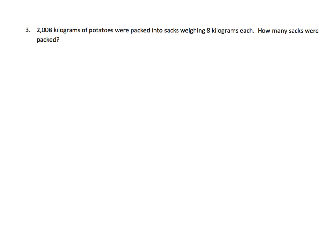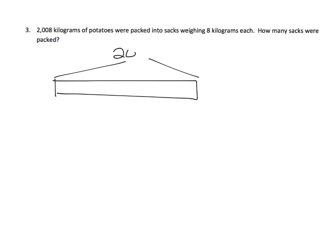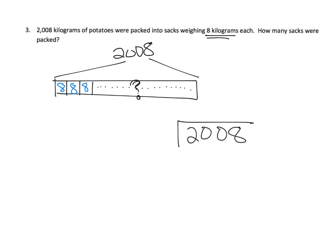Here is where I'm just going to draw the model. Two thousand eight kilograms of potatoes were packed into sacks weighing 8 kilograms each. How many sacks were packed? The tape diagram shows the whole as 2,008 kg, with repeated units of 8 kilograms each — eight kilograms, eight kilograms, eight kilograms, and so on. The question is how many of these 8-kilogram sacks there are. The proper division problem is 2,008 divided by 8, and that gives us how many sacks were packed.